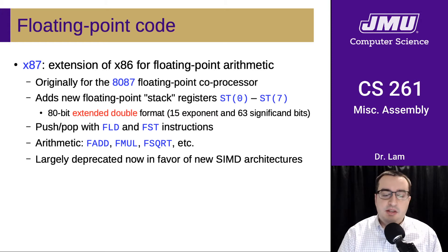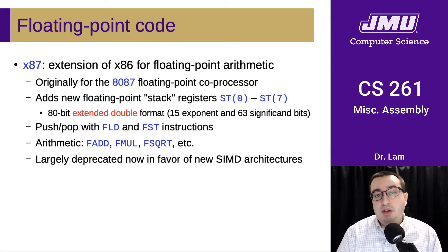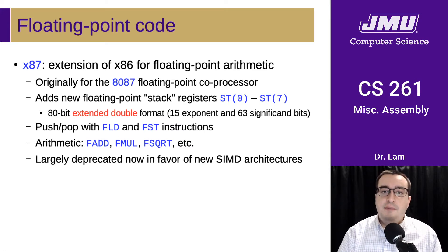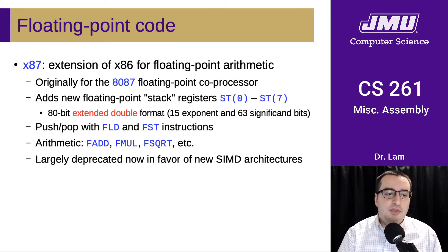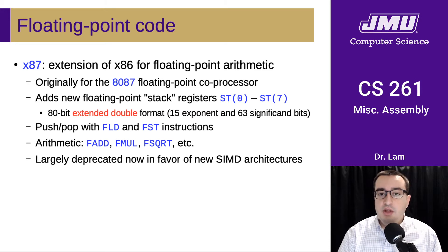The 80-bit format led to some strange and unpredictable rounding error effects because the compiler decided when values should be stored on the stack versus in memory. Whenever written to memory, they were only stored using 64 bits for double precision. This meant your program could have different levels of precision depending on, for instance, how much debug output you had or how highly it was optimized. This format has been largely deprecated in favor of newer SIMD architecture, so we're not concerned about x87 in this course — though you're likely to run across it on the internet.